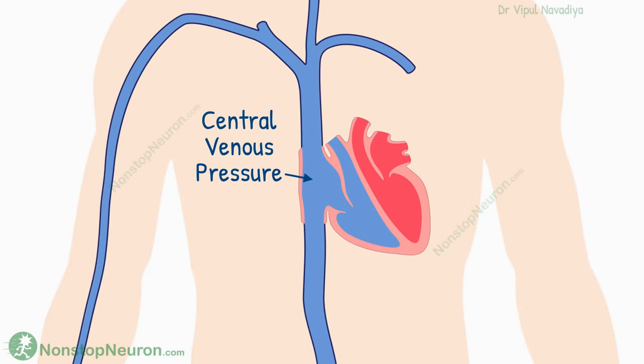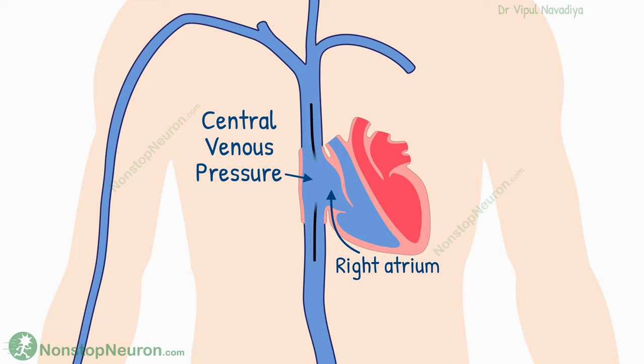Central venous pressure is pressure in the right atrium. Atrial pressure is venous pressure? Yes! All the systemic veins take the blood to the right atrium. So, the right atrium is the final assembly point for all the veins. Moreover, the right atrium is always open for veins, without any separation in between. So, the right atrial pressure is aptly the central venous pressure.